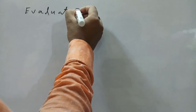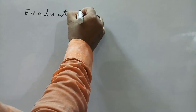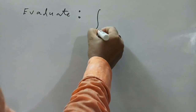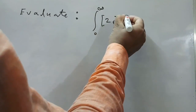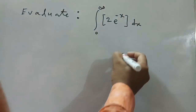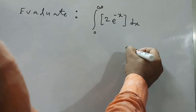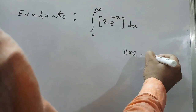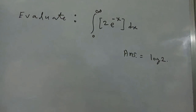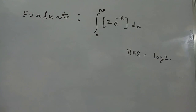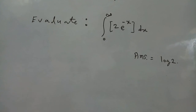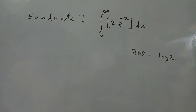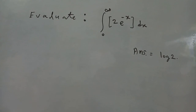Try this yourself at home: evaluate the integral from 0 to infinity of 2e^(-x) · Box[2e^(-x)] dx. The answer is log 2. This type of problem will be shown in the next class. Don't forget to subscribe and like!